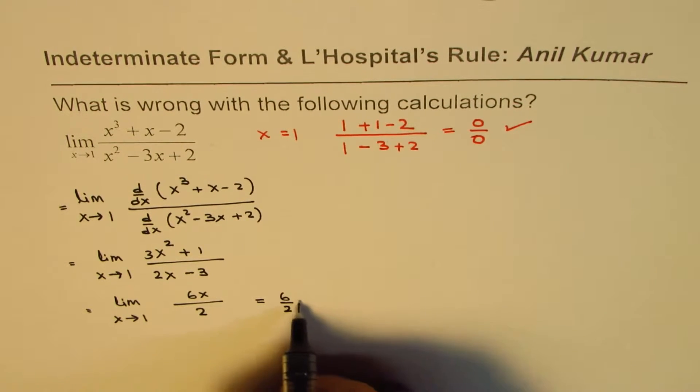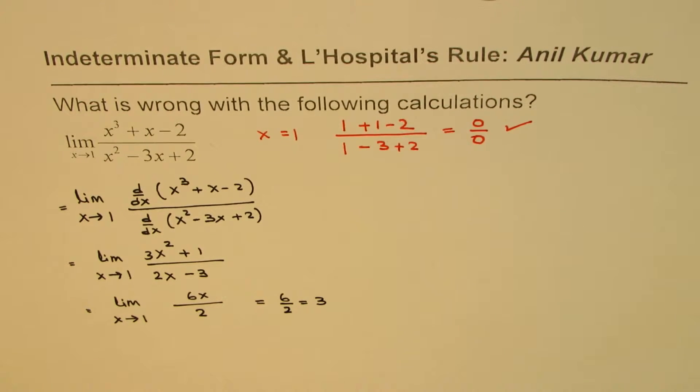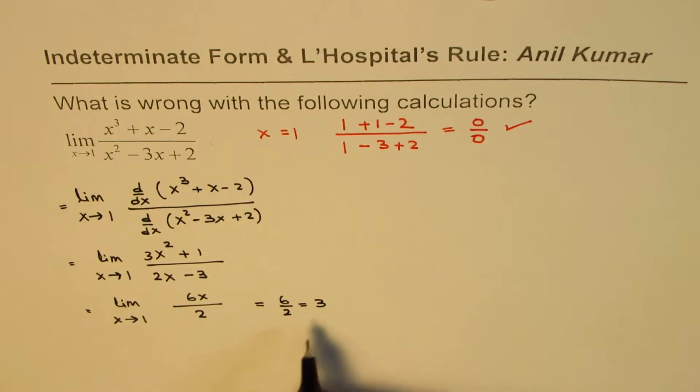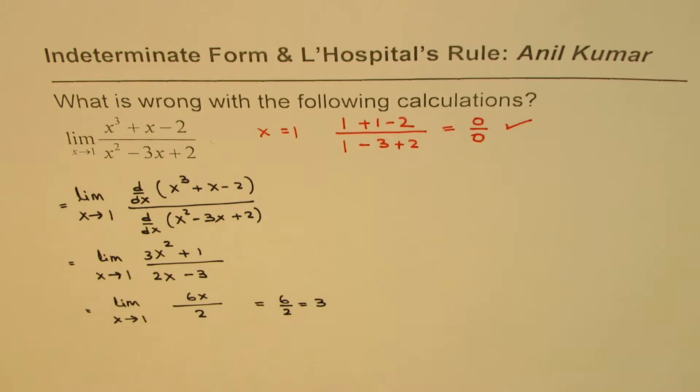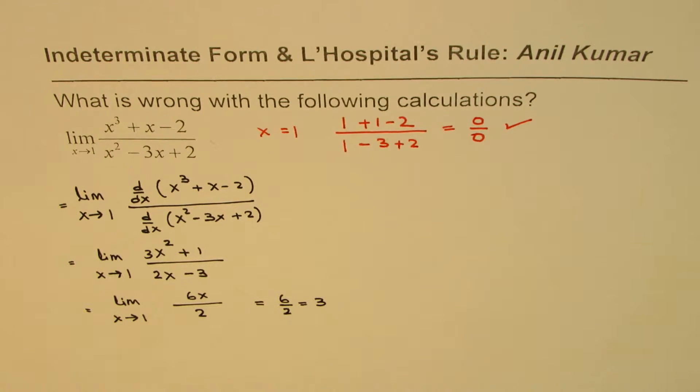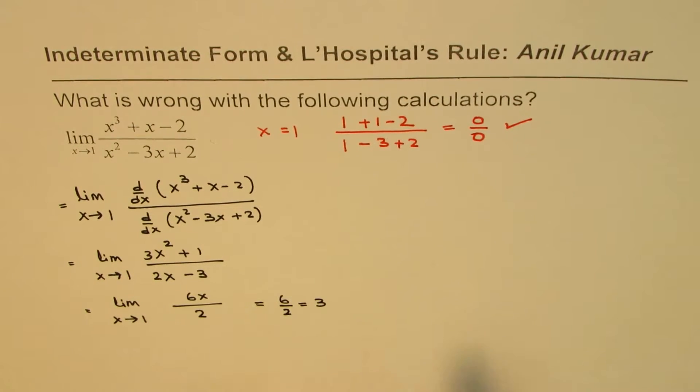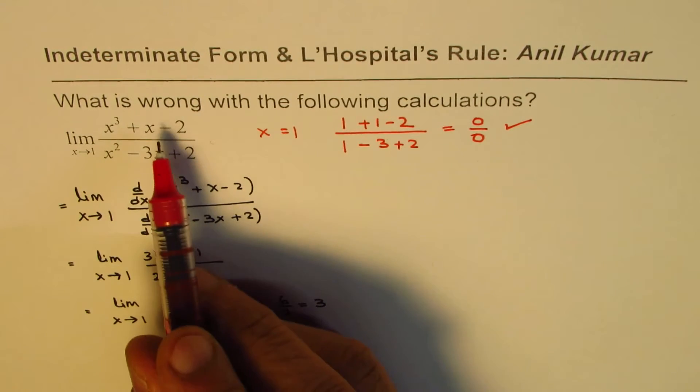So I'm writing my answer of this limit as 3. Now I've performed some mistake in the calculations for the limit. You need to figure out what is the mistake. You can pause the video, answer the question, and then look into my solution.